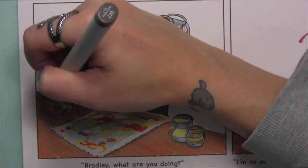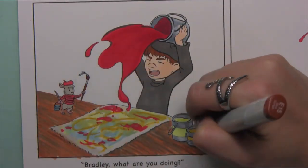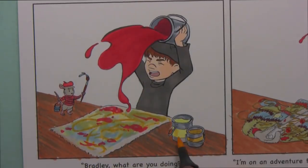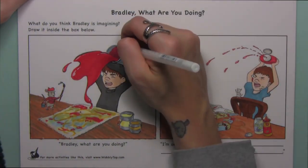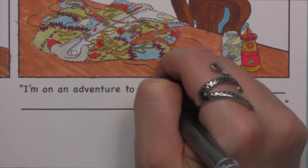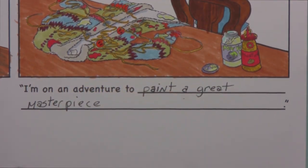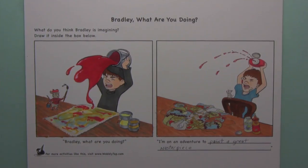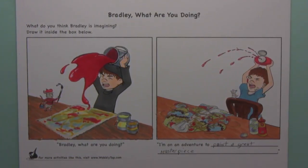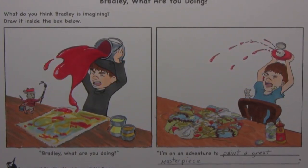Now I'm going in and adding that same wood grain to give a similar environment — even though this doesn't really happen in the book, Bradley's table in his artistic imagination is a little more rough and beat up. Bradley is answering the question — he's on an adventure to paint a great masterpiece! I hope you guys enjoyed this video. If you have any questions or comments, feel free to leave a comment below. Make sure to like this video if you enjoyed it and subscribe to the Wobbly Top channel. It was great hanging out with you guys — have a great week, bye!